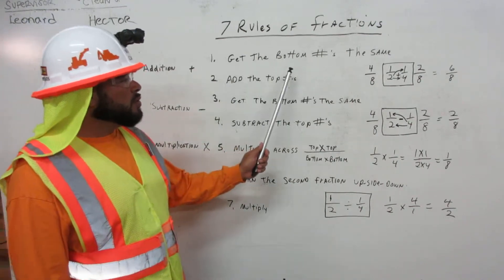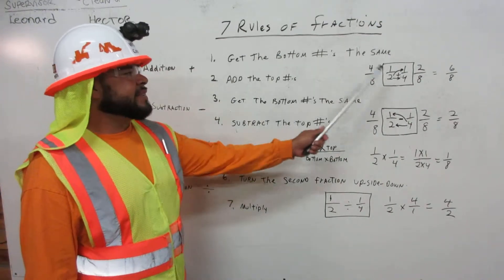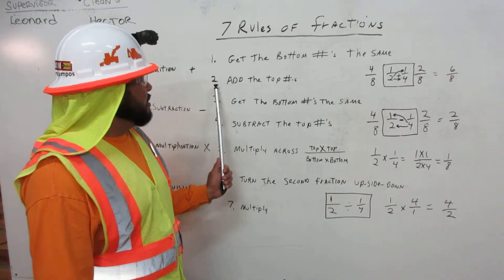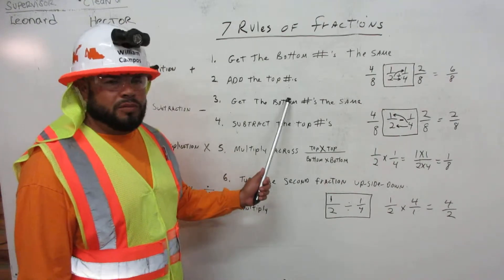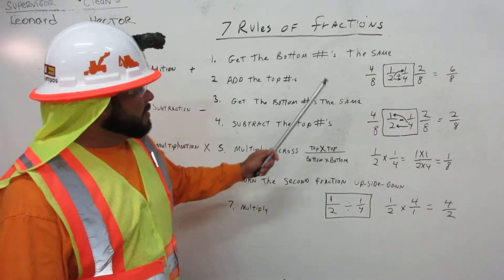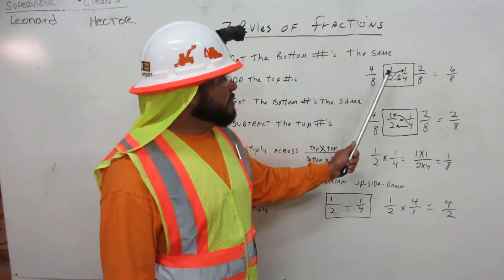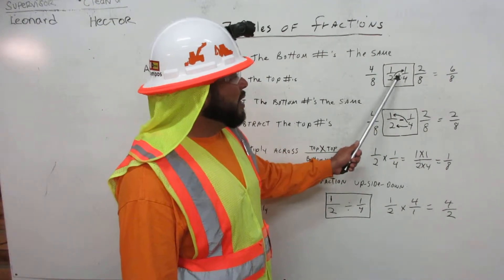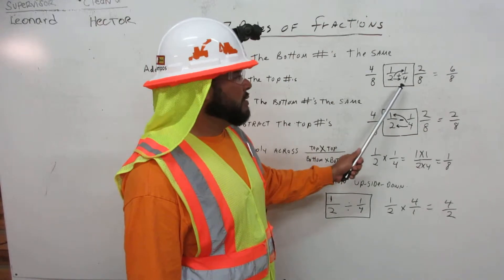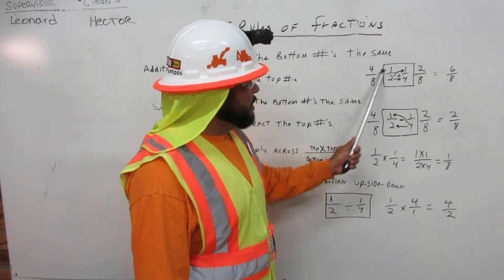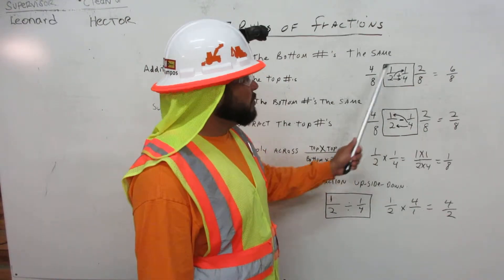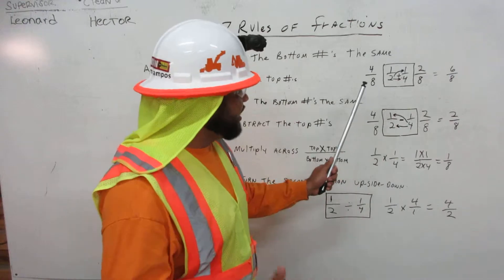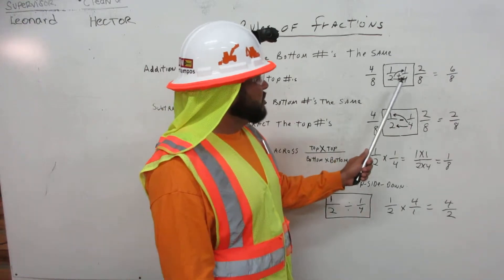You get the bottom numbers the same. Number two, you add the top numbers. For example, we have one half plus one quarter. We box it up, put a little box around it, because we're going to work on that. We're going to change it.